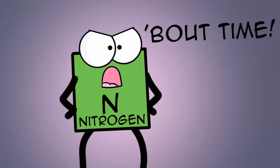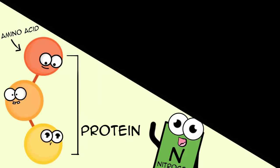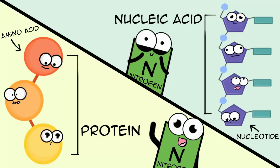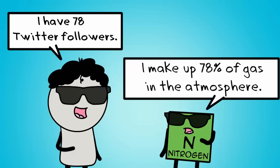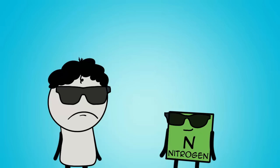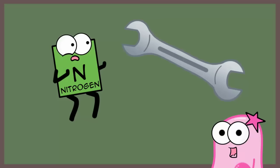Now, what about nitrogen? Well, nitrogen is a critical element in amino acids — remember, that's the monomer of proteins. It's also an element in nucleotides, which are the monomers of nucleic acids. Proteins and nucleic acids are two very important biomolecules for life. Nitrogen is kind of a big deal in the atmosphere, considering it's the primary gas in the atmosphere. The thing about nitrogen is that it's much more useful to organisms when it's fixed into other, more usable forms.